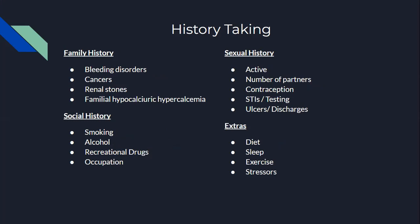For social history, ask about the patient's smoking habits. Do they smoke? Are they actively smoking? Have they smoked before? If so, how much and how often — so you can calculate pack-years. See if the patient drinks alcohol and how often. Chronic alcohol use can cause chronic dehydration, leading to stone formation.